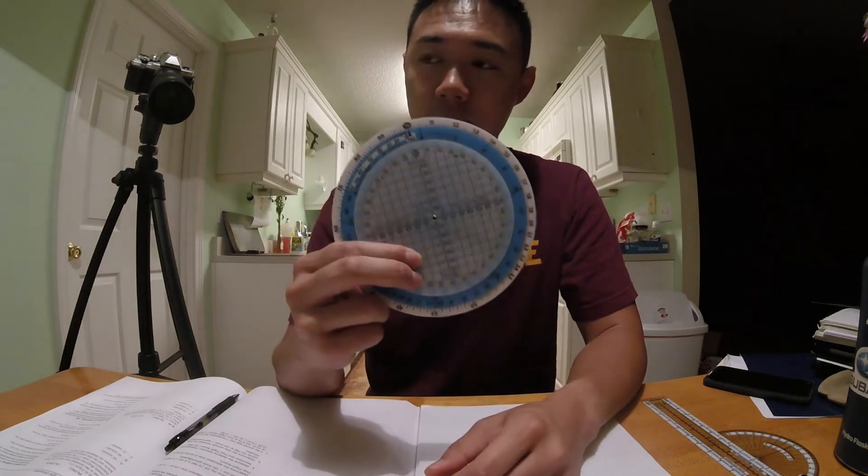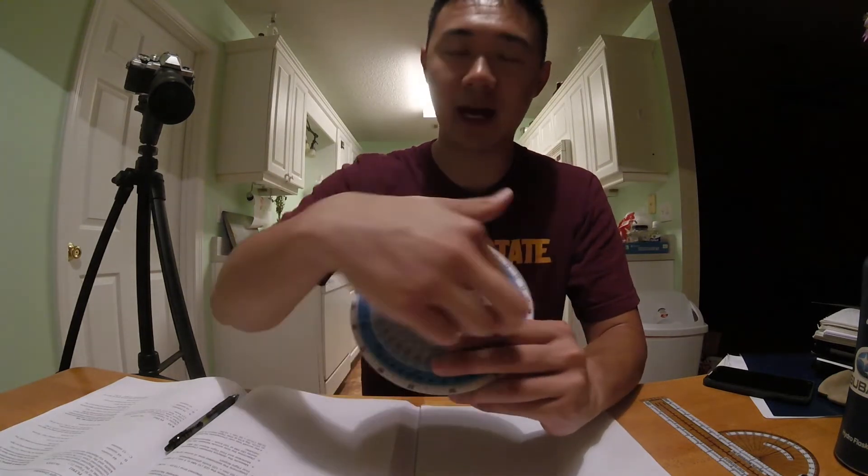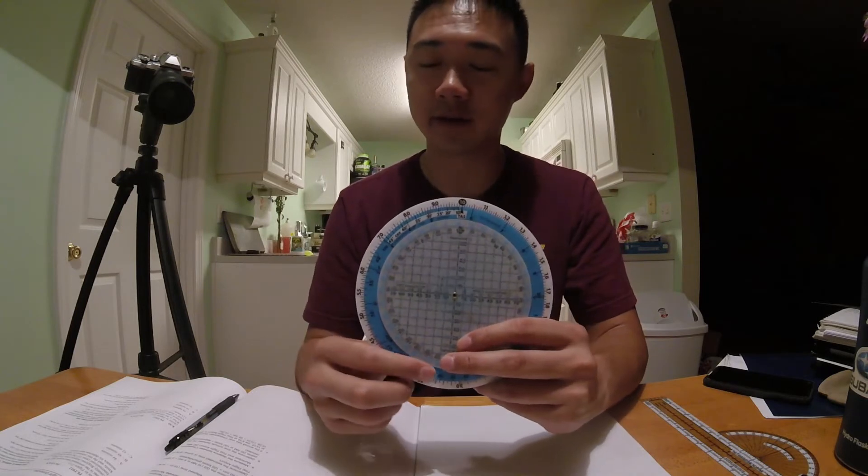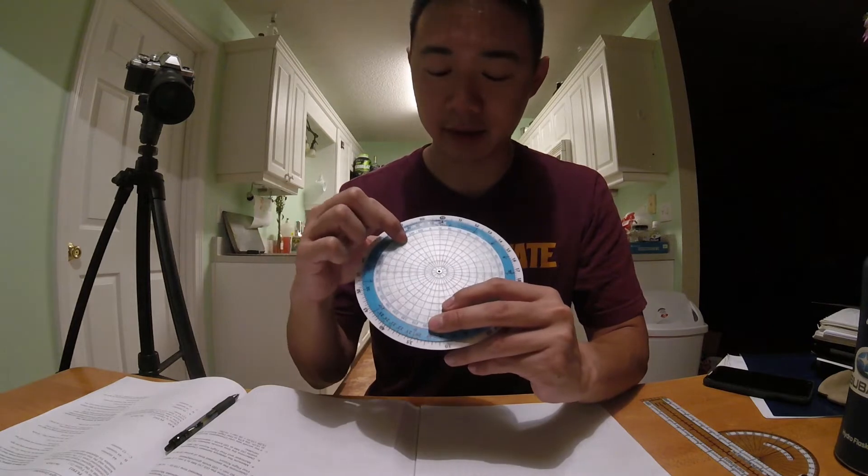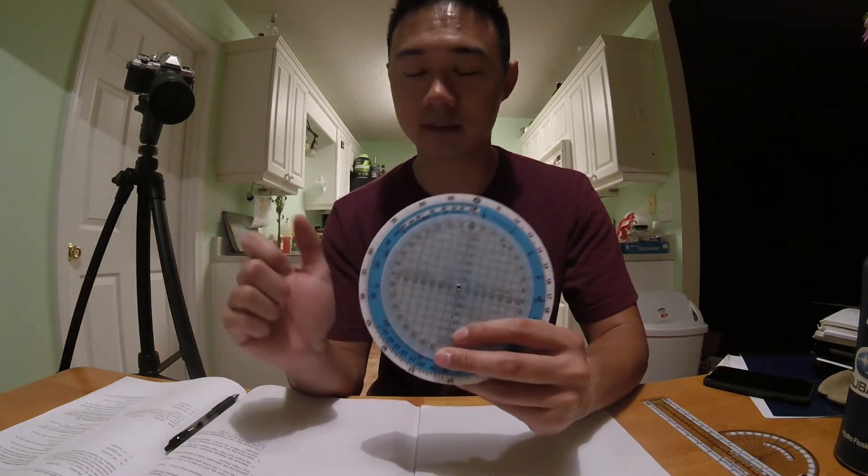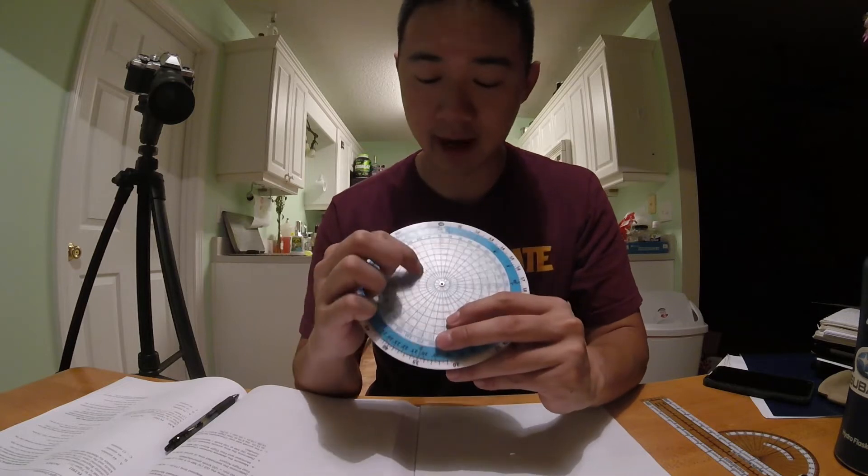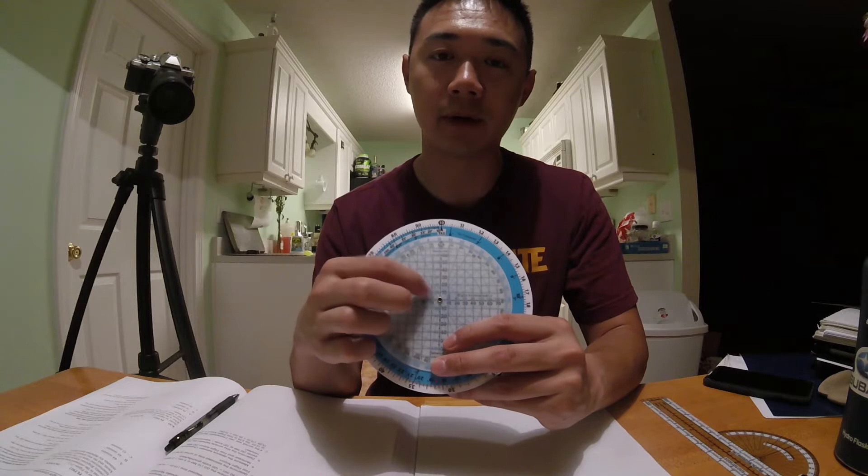Now we need to find our wind components. And to do that, use these rings. Each of these rings is 10 knots. And as you can see from around, we have full 360 degrees. So you find 330 right here. And then you go down to this one ring, two ring, two and a half rings, 25 knots. And then we see we have our horizontal component here and then our vertical component here.